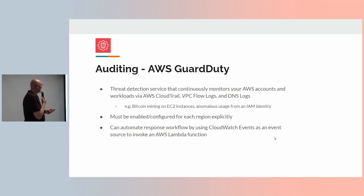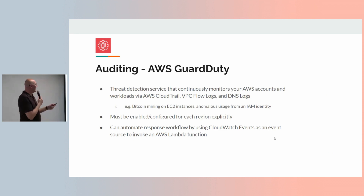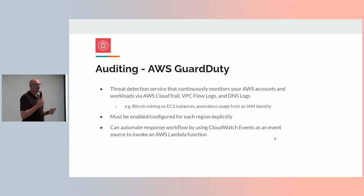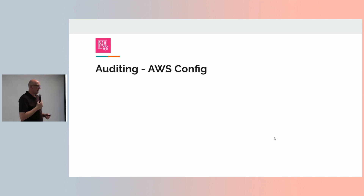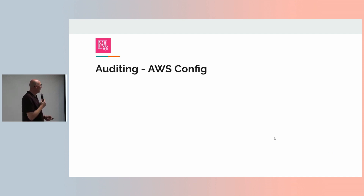You can also automate response workflows — when an event happens, trigger a Lambda function that remediates it. For example, if there's an EC2 instance mining Bitcoin, terminate it with extreme prejudice. GuardDuty and AWS Config are optional for personal accounts — GuardDuty you could probably get away with because it's fairly cheap. Config is a bit more involved to set up and you probably don't need it if you're a small business. It comes down to your risk appetite.